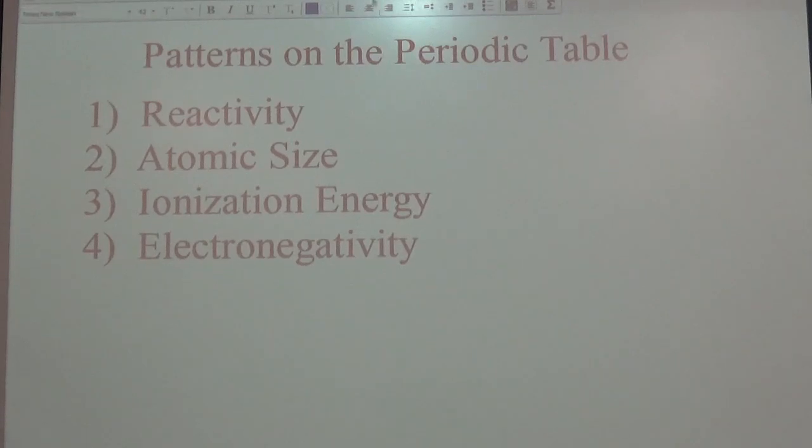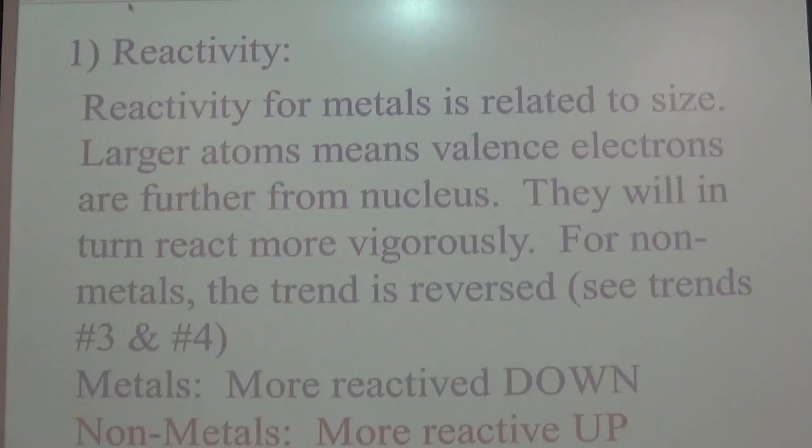So we're going to look at reactivity first. What does reactivity mean? What we mean by reactivity is whether or not that thing reacts vigorously or if it just kind of reacts a little bit. For metals, that reactivity is going to be related to size. The larger the atom is means that the valence electrons are going to be further from the nucleus, valence electrons being those outermost electrons. So when you go down a group, they will in turn react more vigorously. But for the non-metals, that trend is actually reversed. The reason for why is going to be talked about in both trends three and four. But for right now, the biggest thing you need to know is as you move down a group, a metal is going to become more reactive.